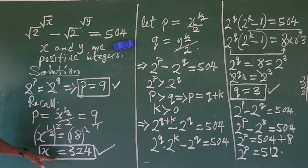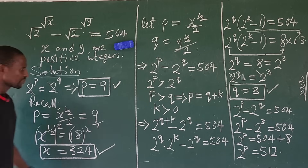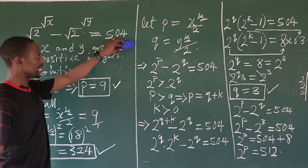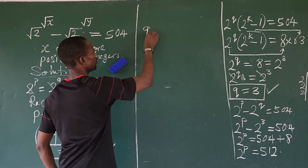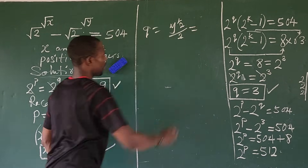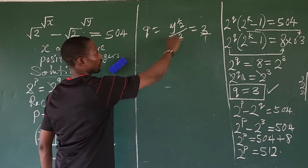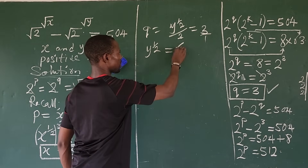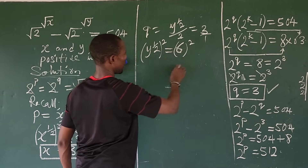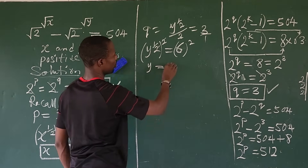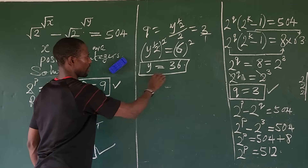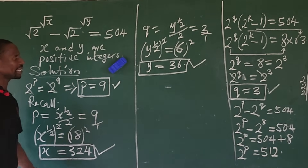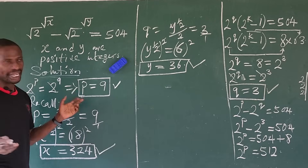For y, recall that q = y^(1/2) / 2 = 3. Cross-multiplying gives y^(1/2) = 6. Squaring both sides, y = 6² = 36. So the value of y is 36. Now let's verify that these values satisfy the original equation.